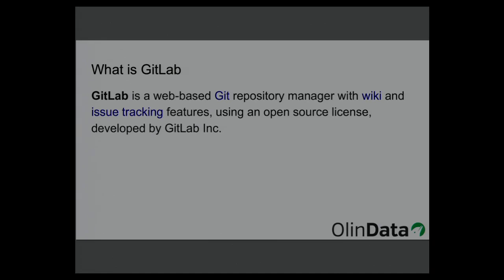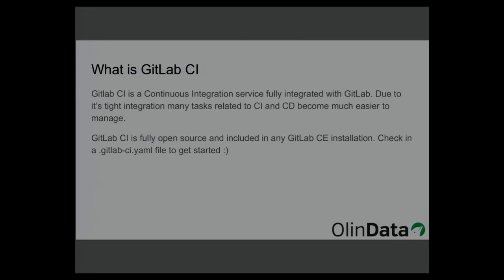GitLab CI is a continuous integration service. The nice thing is that it's fully integrated with GitLab itself. Because most of the time when you're doing CI, it's very tightly coupled to the source code you want to test, it's quite nice that GitLab CI is so closely coupled. It's fully open source, and if you're already using GitLab community edition, all you need to do is check in a .gitlab-ci.yaml file and you're getting started.